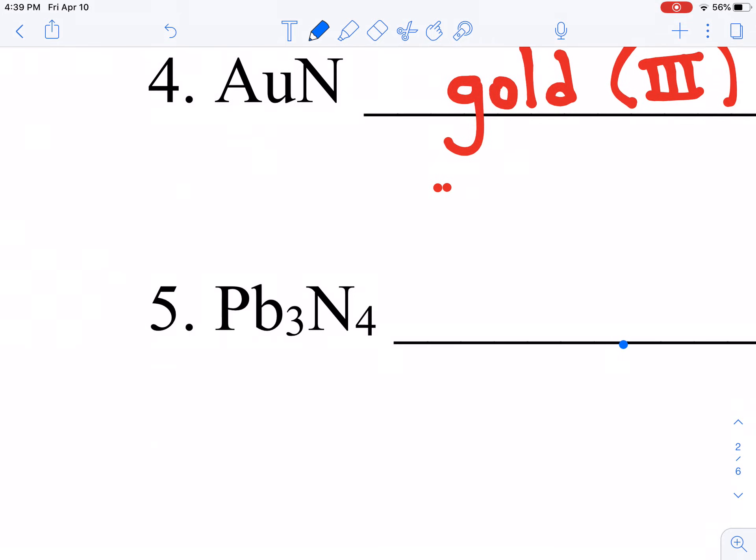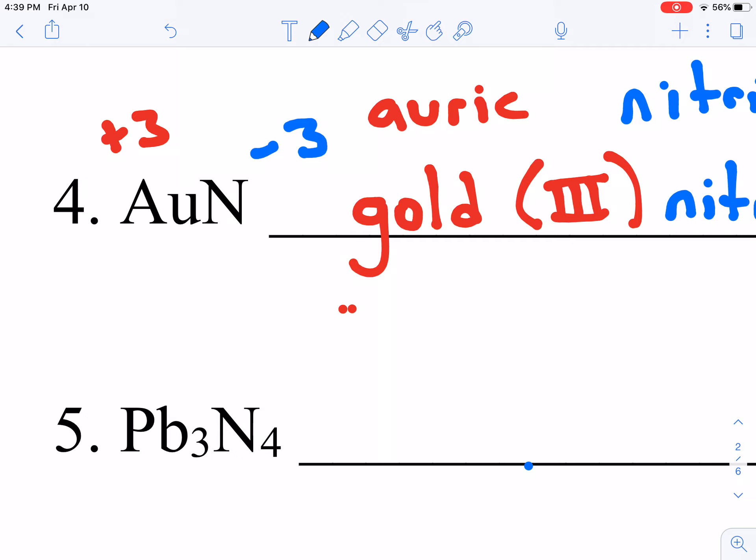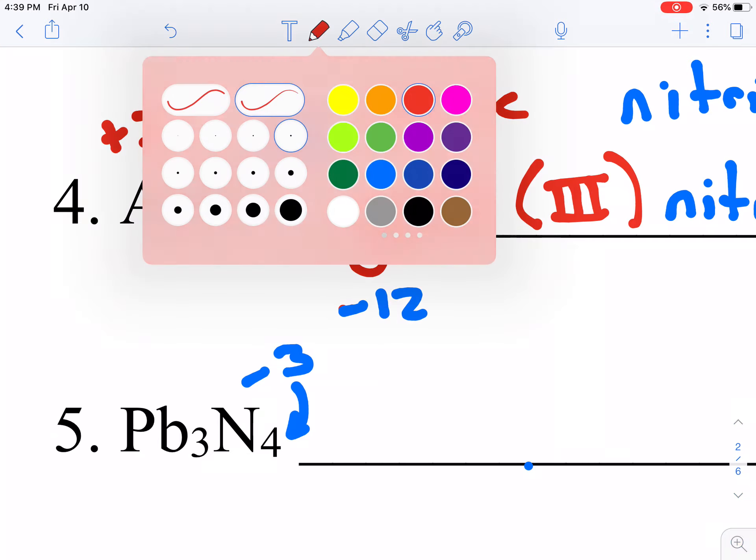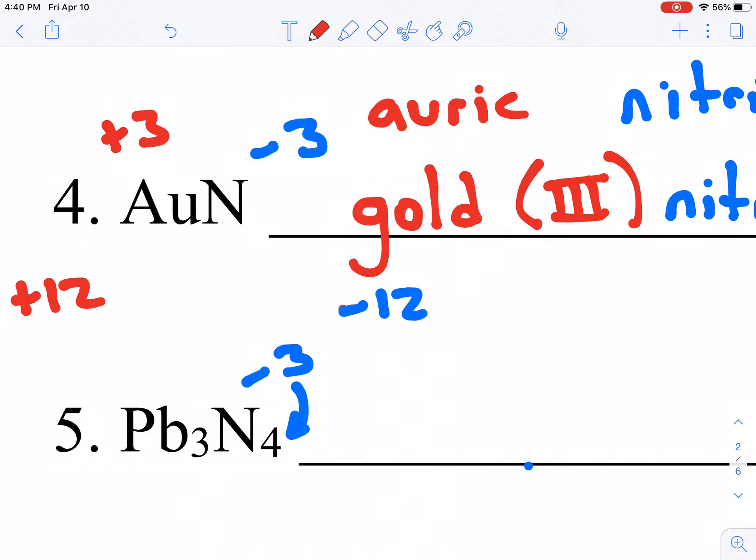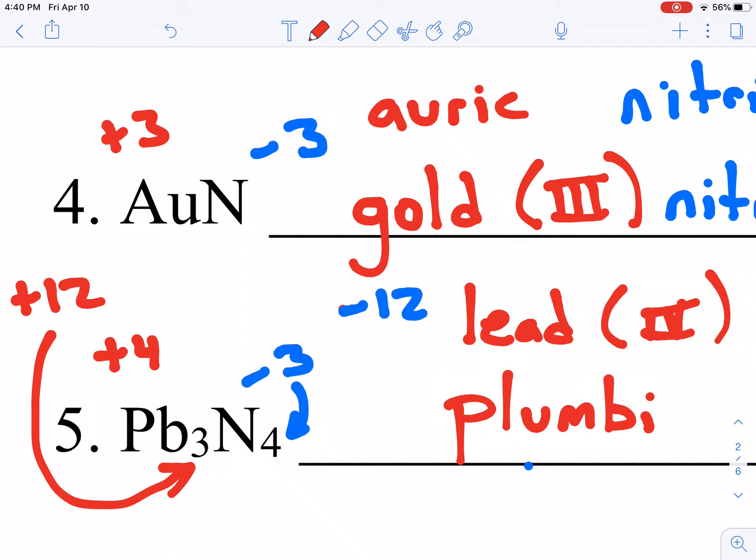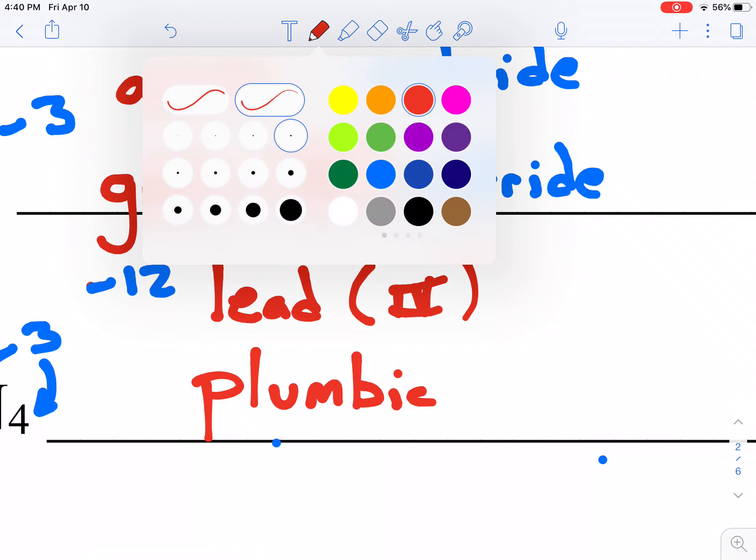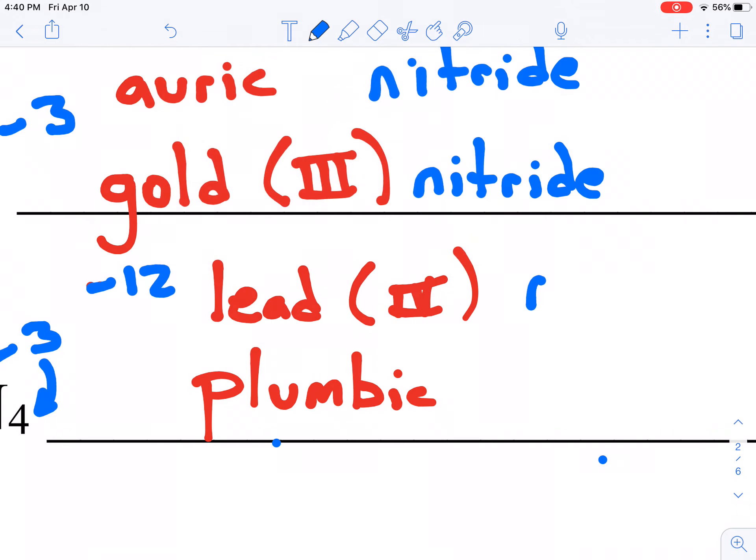Finally, we have Pb3N4. We know nitrogen's charge. It's a minus three. There are four nitrogens, so negative three times four is negative twelve. That means the lead here has to be a plus twelve charge overall, but that plus twelve is spread over three atoms, so each one of these leads is actually a plus four. So we could either write this as lead four or plumbic. And then we'll finish off with the ending here, which is nitride.